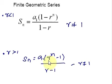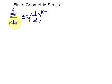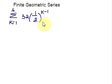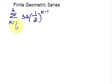Let us see how to apply these formulas and find the sum of a finite geometric series. Let me take one example and explain step by step. The example is: summation where k starts from 1 to 6 of 32 times (1/2) raised to k minus 1. As a first step, let us write down the first three terms of the series by plugging in k equal to 1, 2, and 3 in this expression.